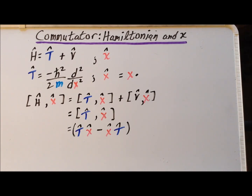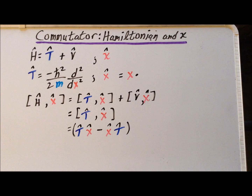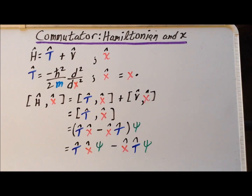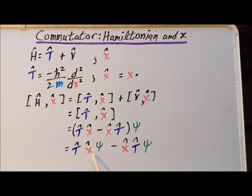By the definition of the commutator, the commutator of T and x is Tx minus xT. To make our future computations clearer, we have these operators act on a dummy function written on the right-hand side. The problem becomes T acting on x times ψ, minus x acting on T times ψ. We use the property that operators act from right to left, so the first operator to act in the first term is x, and in the second term is T.